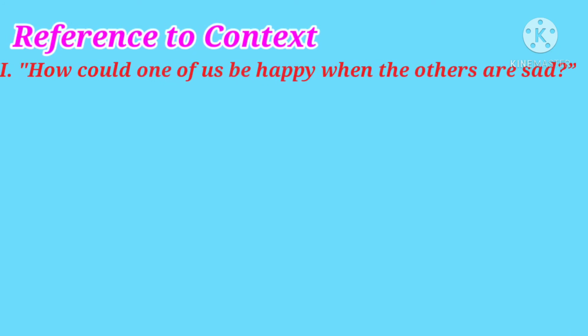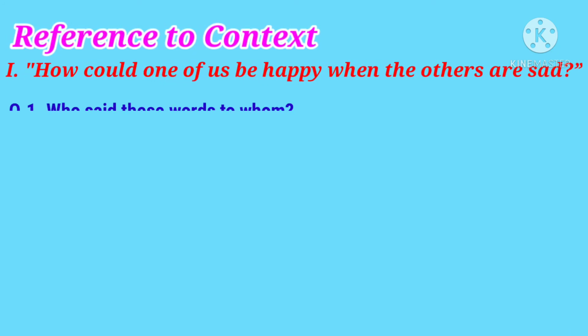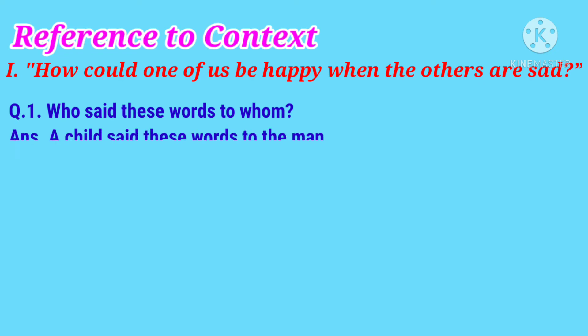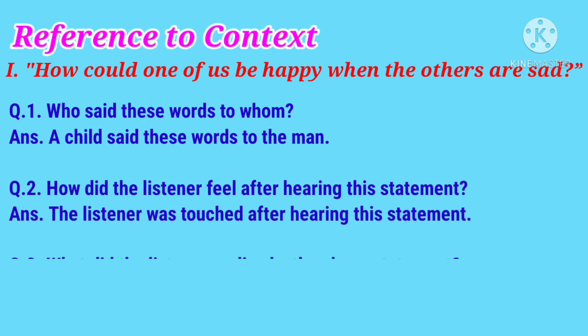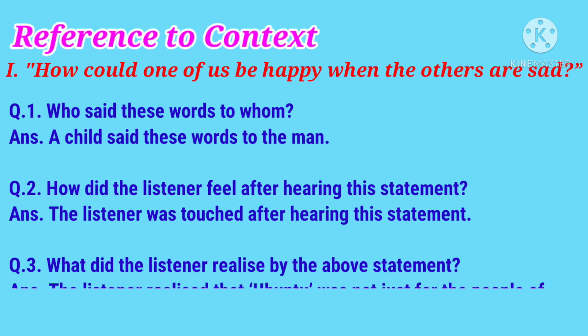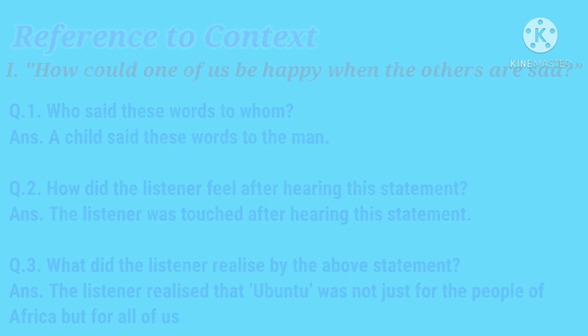The first reference to context is: 'How could one of us be happy when the others are sad?' Question one: who said these words to whom? A child said these words to the man. Question two: how did the listener feel after hearing this statement? The listener was touched. Question three: what did the listener realize? The listener realized that Ubuntu was not just for the people of Africa but for all of us.